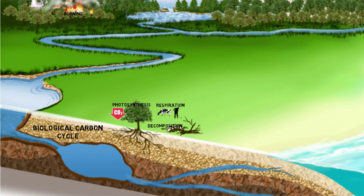Through photosynthesis, trees and plants absorb carbon dioxide from the air and convert it into chemical energy. Herbivores eat plants, the food chain unfolds, and eventually the majority of carbon retained by plants leaves the terrestrial biosphere through respiration.